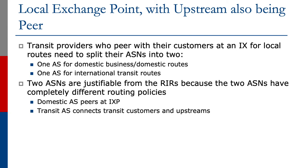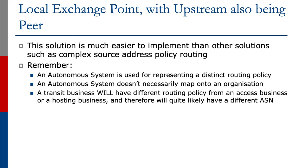Transit providers who peer with their customers at an exchange point for local routes need to split the AS into two: one AS for domestic business and domestic routes, and another AS for international transit routes. Two AS numbers are entirely justifiable from the regional registries, because these two ASs have completely different routing policies — a domestic AS peers at the exchange point, and the transit AS connects to transit customers and upstreams. This solution is much easier to implement than other solutions such as complex source address policy routing. Remember, an autonomous system is used for representing a distinct routing policy, and it doesn't necessarily map onto an organization. A transit business will have different routing policy from an access business or a hosting business, and therefore will quite likely have a different autonomous system number for each.